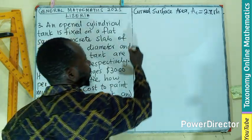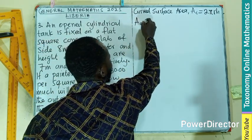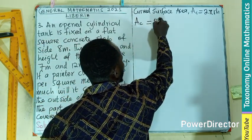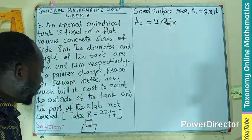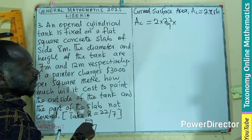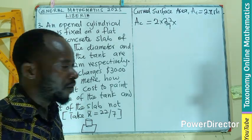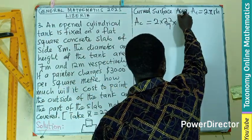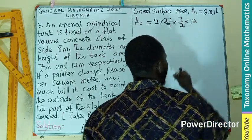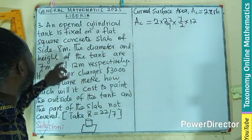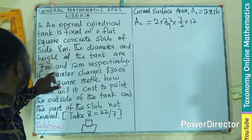Now we do substitution. Our AC is 2 times 22/7 times radius. We don't know the radius, we only know the diameter. Radius is diameter over 2, so 7 divided by 2 times the height, which is 12 cm. We know that from the question.